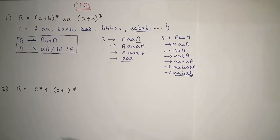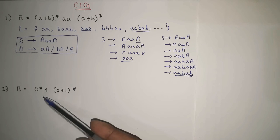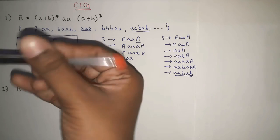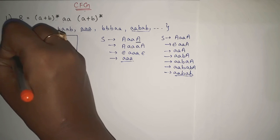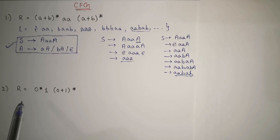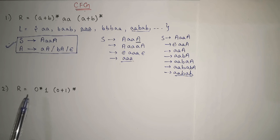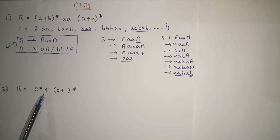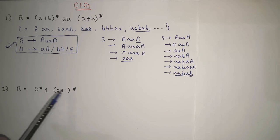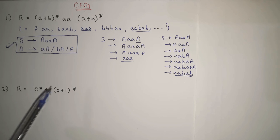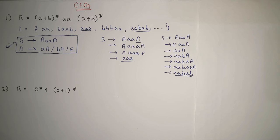Now let us see a second example. R = 0* 1 (0+1)*. This means zero or more occurrences of 0, then this 1 is compulsory, and then zero or more combinations of 0 and 1. The minimum length string that can be generated is just '1' because that '1' is compulsory.